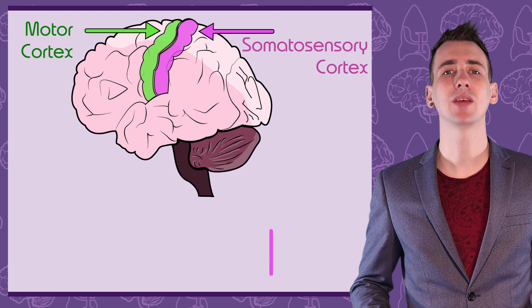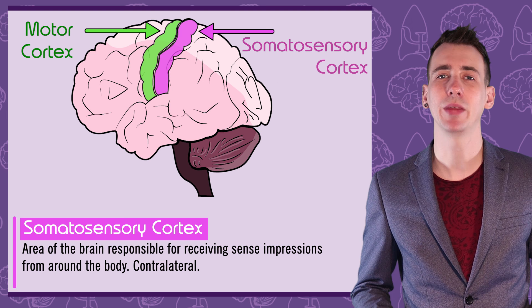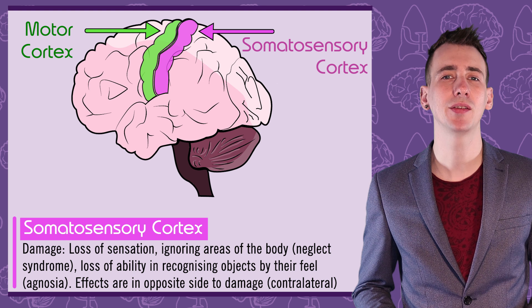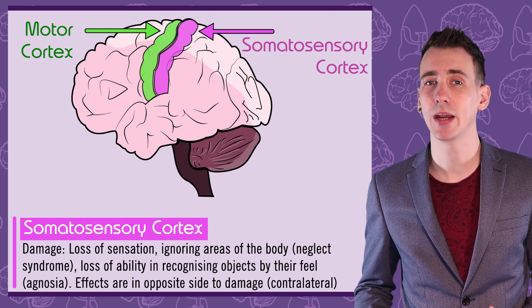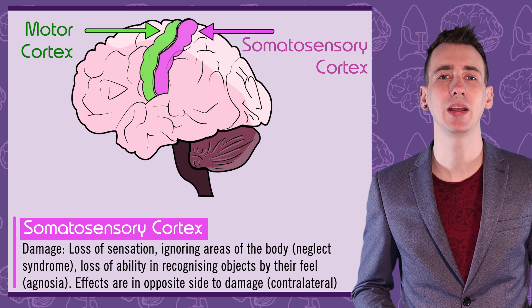The somatosensory cortex in each hemisphere detects sensations from the opposite side of the body. Damage to one side of the somatosensory cortex can lead to the loss of sensation from the opposite side of the body. Somatosensory damage can also lead to ignoring areas of the body, known as neglect syndrome, or losing the ability to recognise objects by feeling them, known as agnosia.